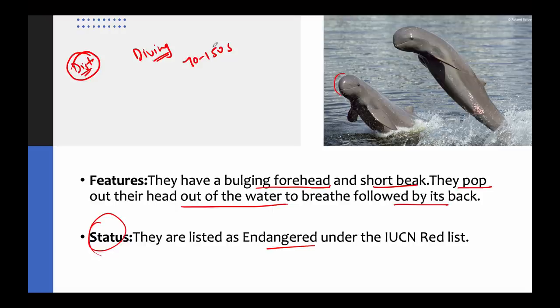They tend to live in pods — groups with smaller numbers than other dolphins. They are highly social, but there may be only three to six members per pod. They are very curious about their surroundings and have been observed looking around when they surface for air to see what is around them.